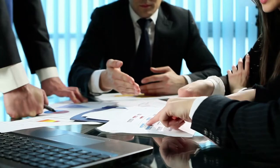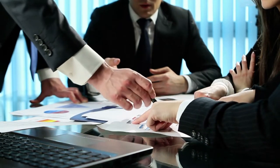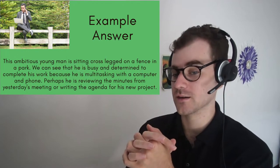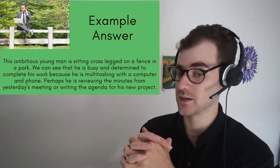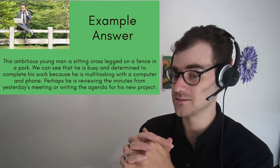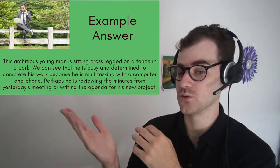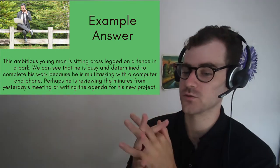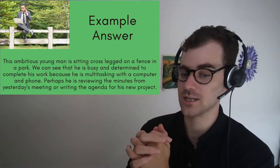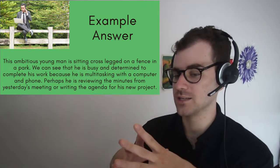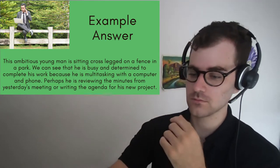So let's look at a paragraph. This ambitious young man is sitting cross-legged on a fence in a park. We can see that he's busy and determined to complete his work because he's multitasking with a computer and phone. Perhaps he is reviewing the minutes from yesterday's meeting or writing the agenda for his new project. It's very important that you can use these words in the business English environment.